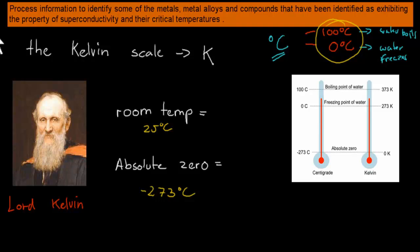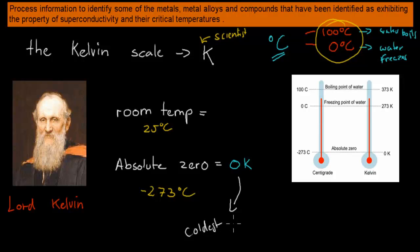For everyday life that's pretty useful, but the Kelvin scale is sometimes more useful for scientists because the Kelvin scale starts at something called absolute zero. Absolute zero, which is zero Kelvin, is literally the coldest possible theoretical temperature. That's the coldest temperature we could have, and it happens to be minus 273 degrees Celsius.